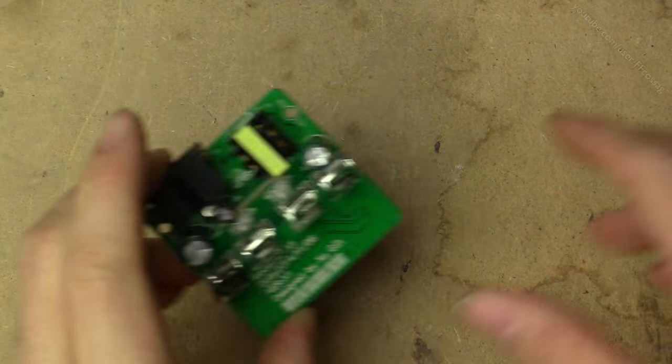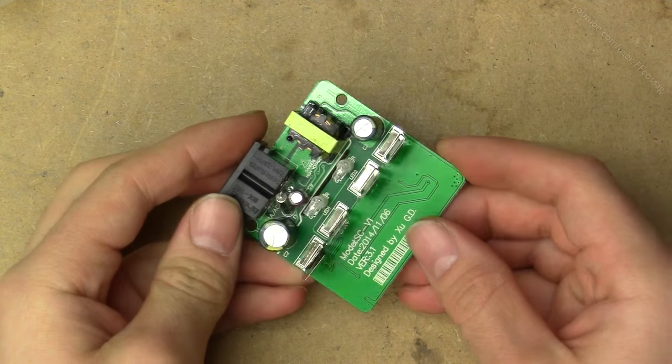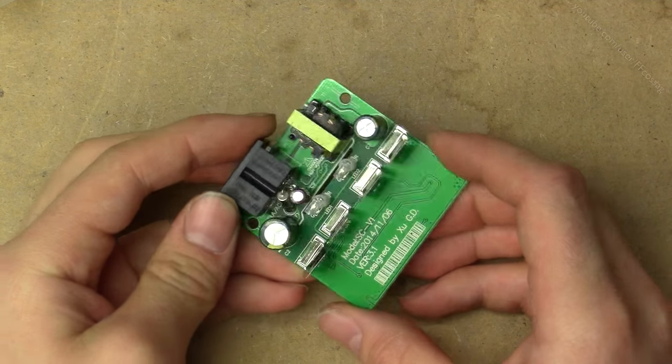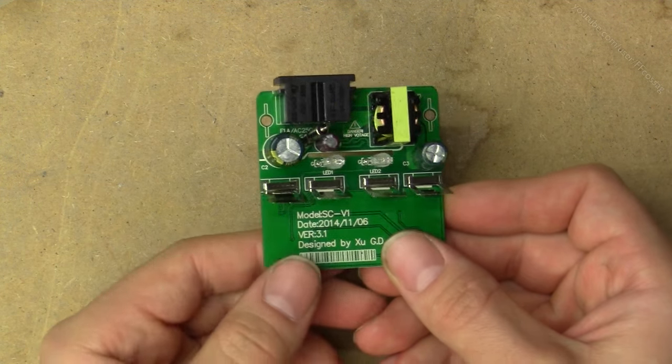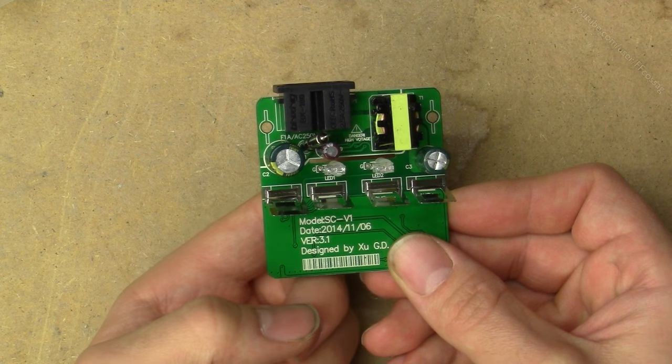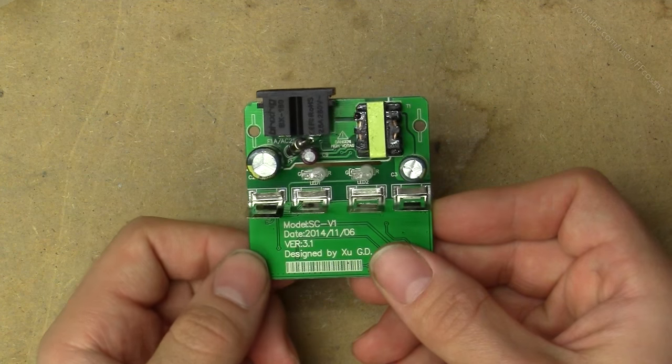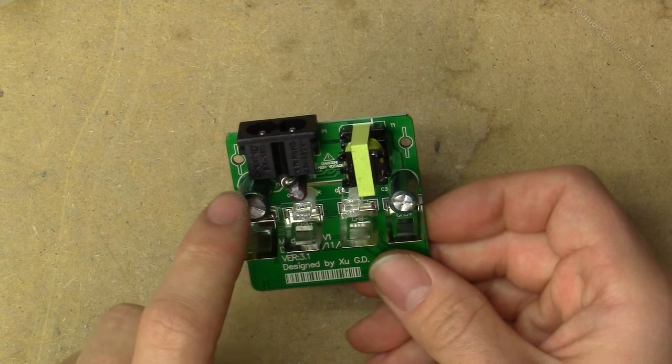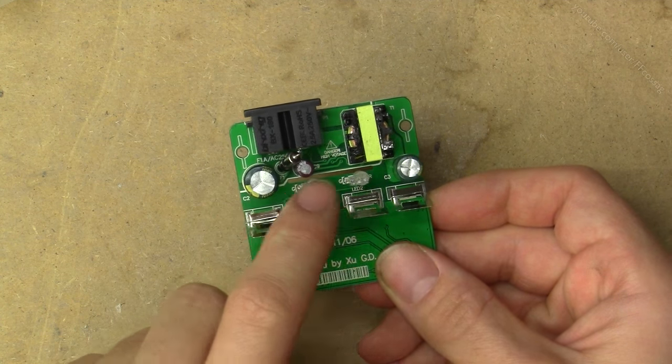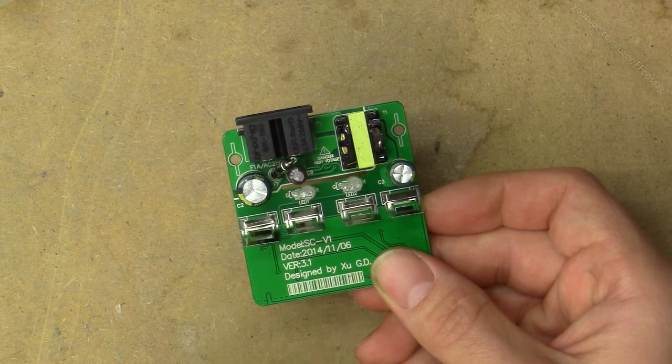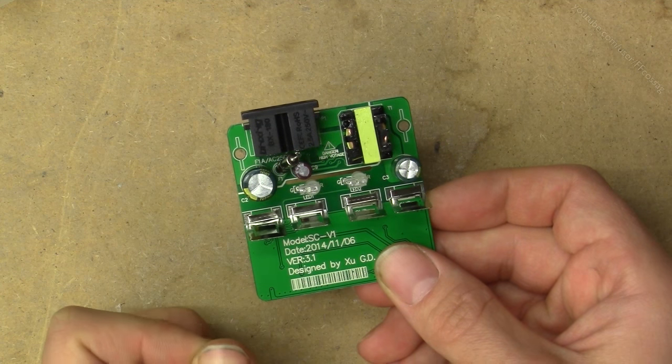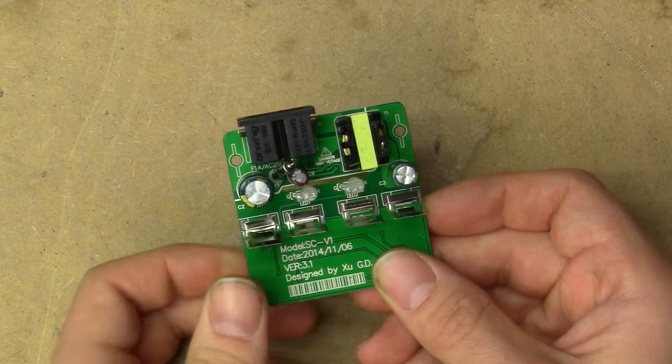Here are the guts of the charger itself, and on the top it's a quite sparse board with a notable isolation gap between the primary and secondary there. And also, quite notably, there are no filtering components at all. Good thing, less things to go wrong. Bad thing, gonna put out more crap on both the grid and into the air.